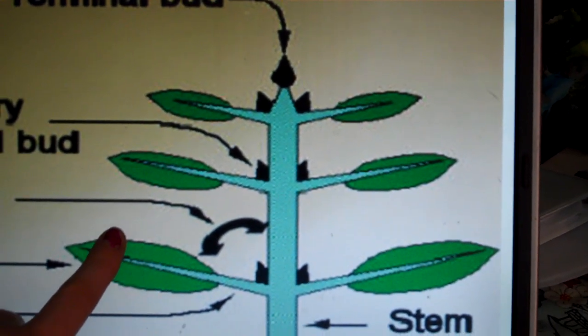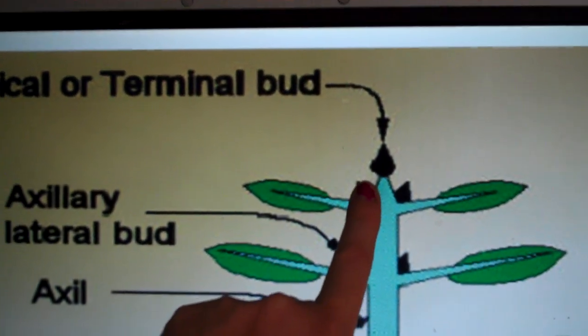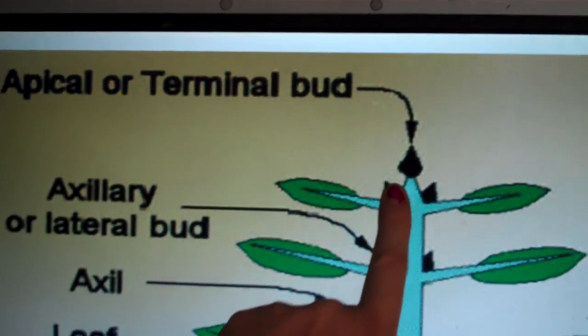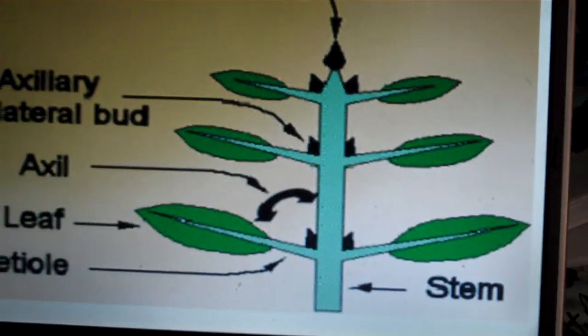Now normally in a plant's life cycle the growth is primarily located at the terminal bud or apical bud because a plant is going to want increase in size to compete for resources such as sunlight.